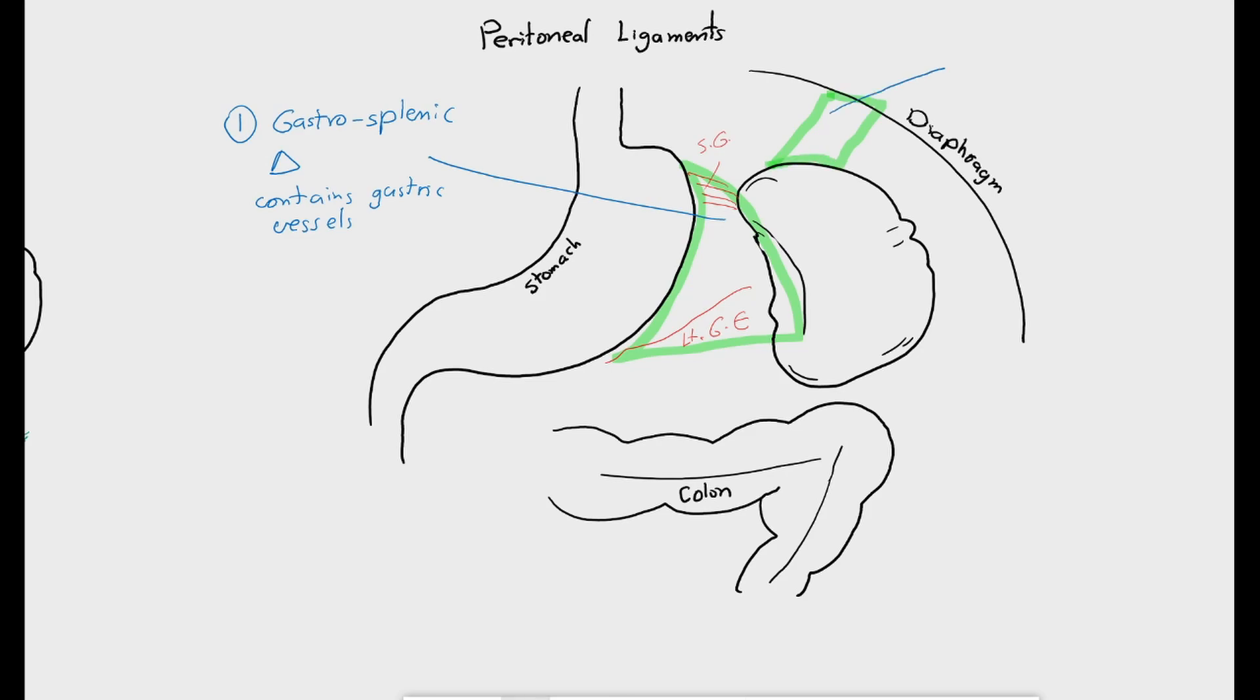The second ligament is the splenophrenic ligament. Between the upper pole of the spleen and the diaphragm, it may contain fleshy fibers that bleed easily during splenectomy.